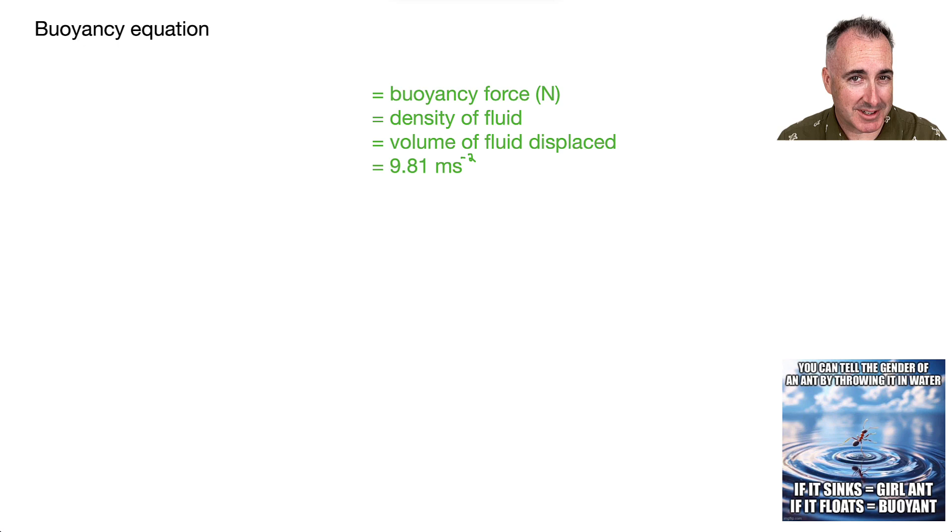We have an equation for this, and it's in your data booklet. It goes FB equals rho times V times G. FB is the buoyancy force. Rho is the density of fluid in kilograms per meter cubed—it's mass over volume. V is the volume of fluid displaced in meters cubed. And G is the acceleration due to gravity, 9.81 meters per second squared.